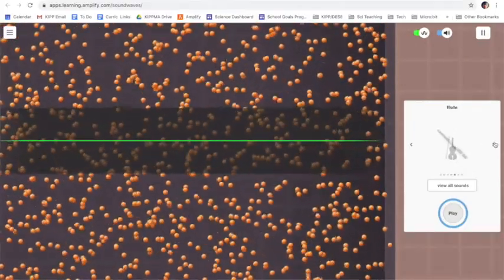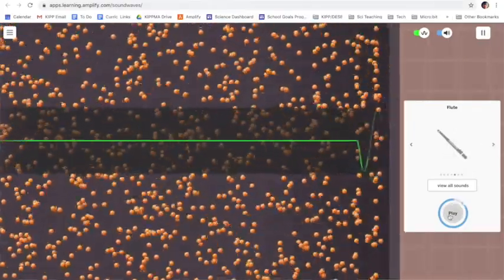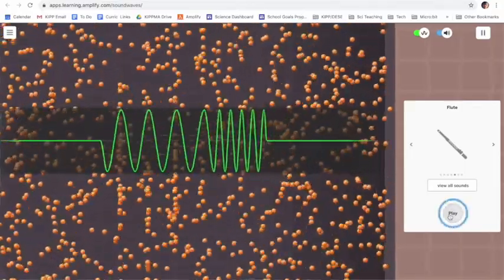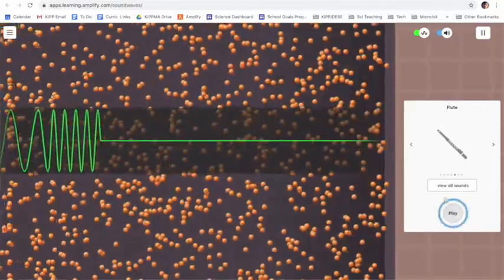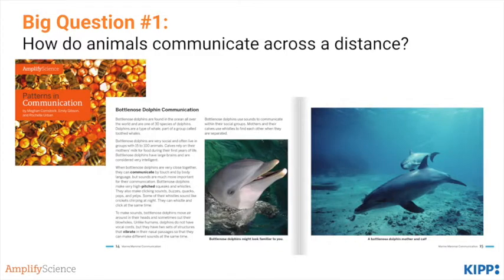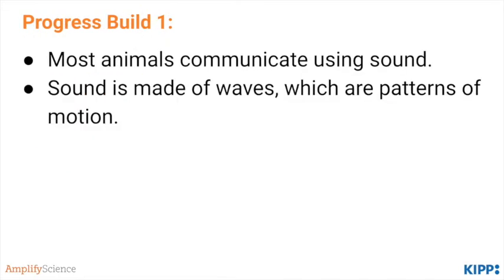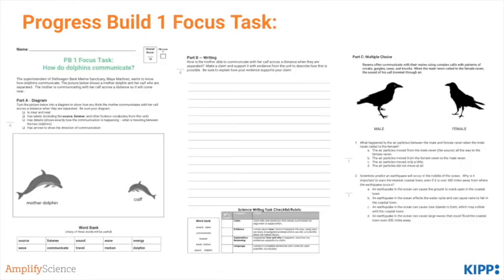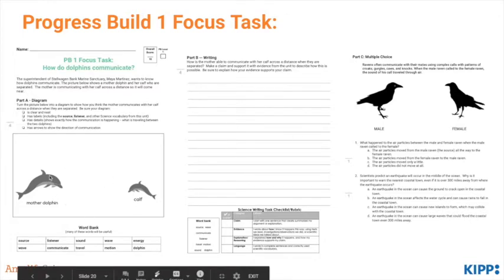In the simulator, students can choose different instruments, hear them make a noise, and see how that noise is caused by the collision of air particles. Next, students read part of the reference text Patterns and Communication to learn more about bottlenose dolphin communication in order to help answer the focus task. At this point in the unit, students should understand progress build one: most animals communicate using sound, and sound is made of waves, which are patterns of motion.